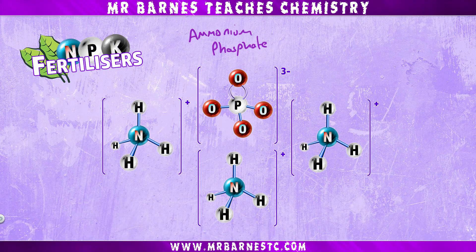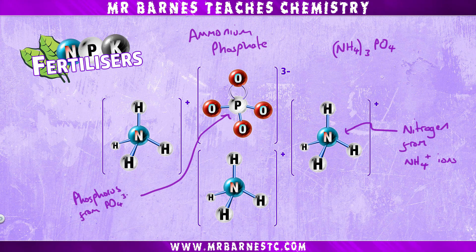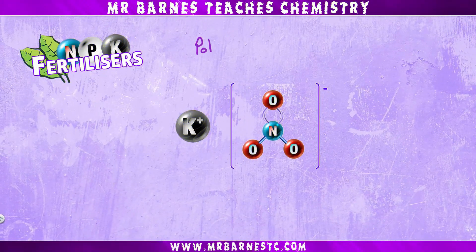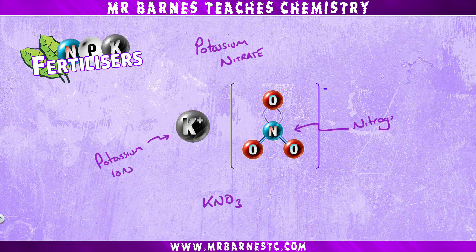Ammonium phosphate, which has the formula NH4NO3PO4, contains nitrogen again from the ammonium ions, and it also contains phosphorus from the phosphate ions. And then finally potassium nitrate, KNO3, contains both potassium ions and nitrogen from the nitrate ions.